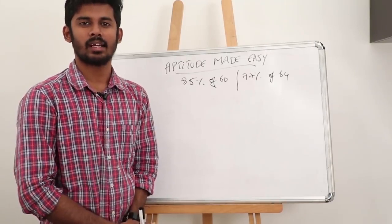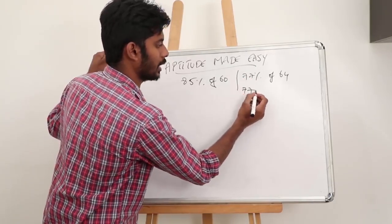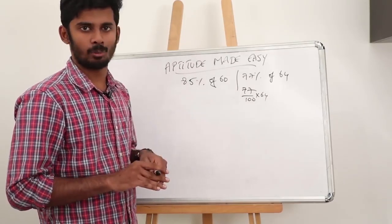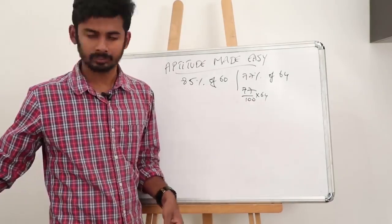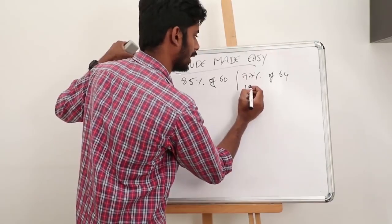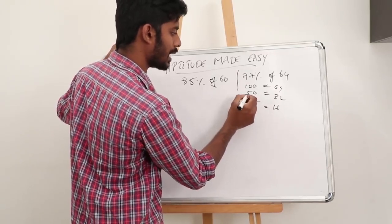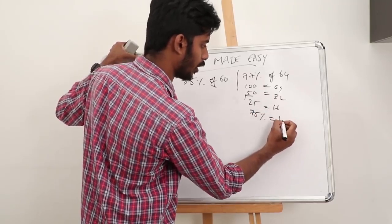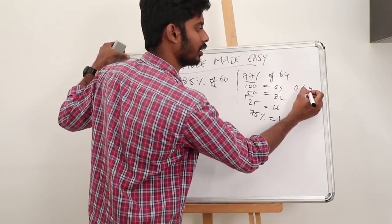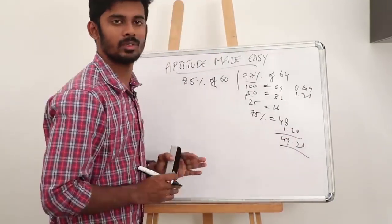For the next trick: when you get a question like '77% of 64', people write 77 by 100 into 64 and work through decimal factors — a very long process. The easy way: 100% of 64 is 64. 50% is 32. 25% is 16. So 75% is 48. You want 2% more — 1% of 64 is 0.64, so 2% is 1.28. Add 1.28 to 48: answer is 49.28.